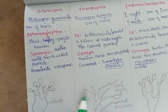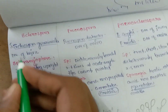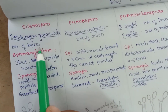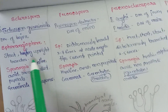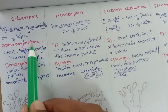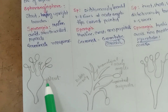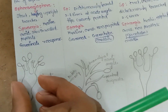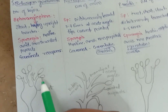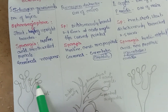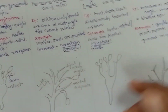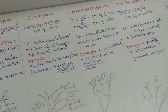The first genus is Sclerospora. The example is Sclerospora graminicola — it causes Downy Mildew of Bajra, also called Green Ear of Bajra. Being a Downy Mildew genus, it has a sporangiophore that is stout — bulged at the middle — with upright branches bearing sporangia, called sterigmata.